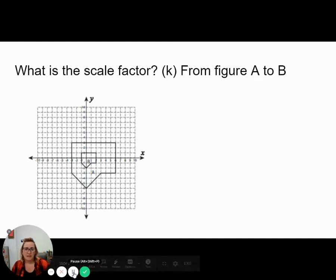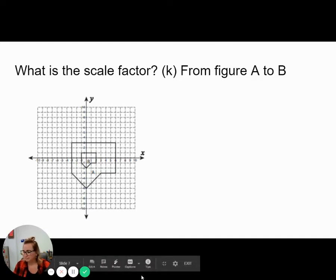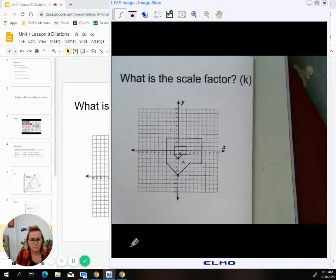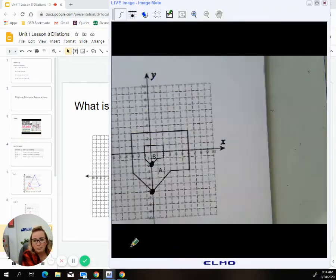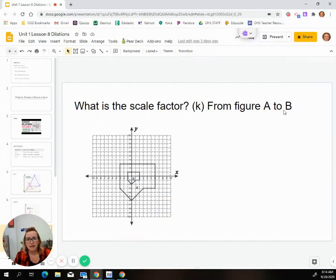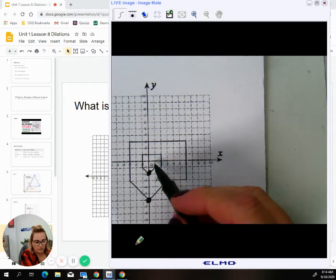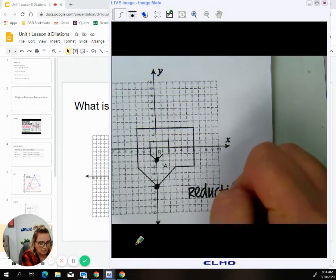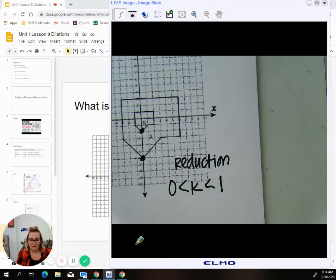So when you're trying to find a scale factor when you're given an image and a pre-image, the easiest thing to do is to find a point that they both have and then figure out how they got from one point to the next. In this case, if we look at our figure, you'll see that they both have this point right here. Notice that it says we're going from A to B. A is the bigger figure, B is the smaller figure, so we are going down. We're going from bigger to smaller, so we are doing a reduction. That means we automatically know that our answer should be between zero and one.